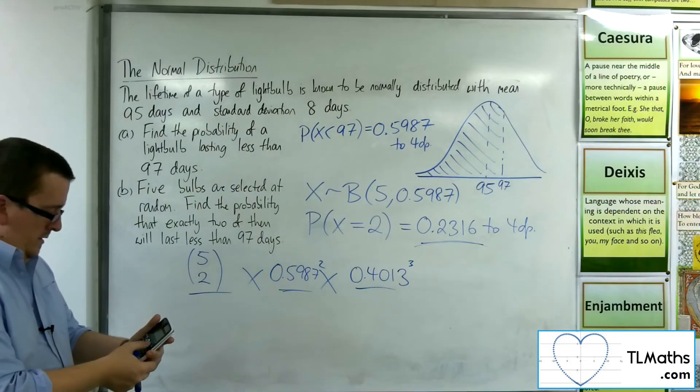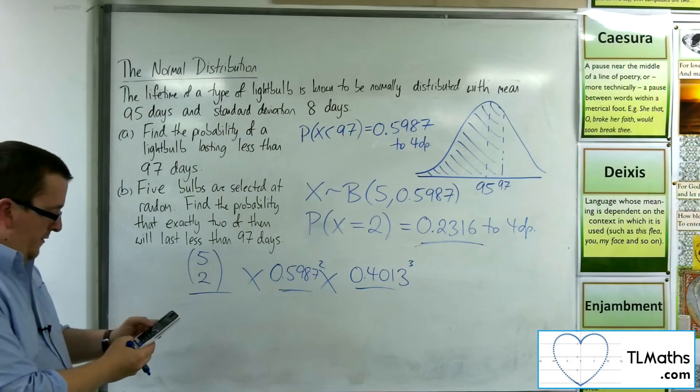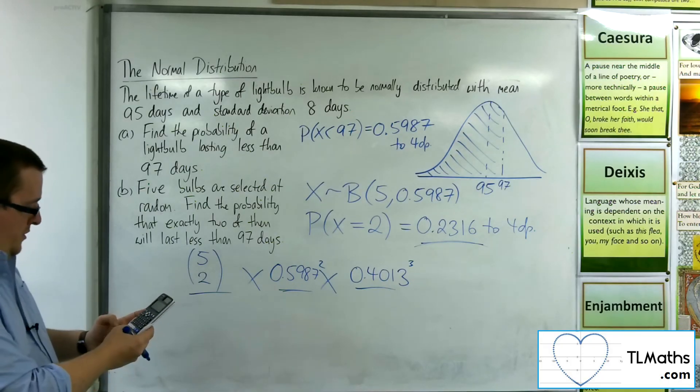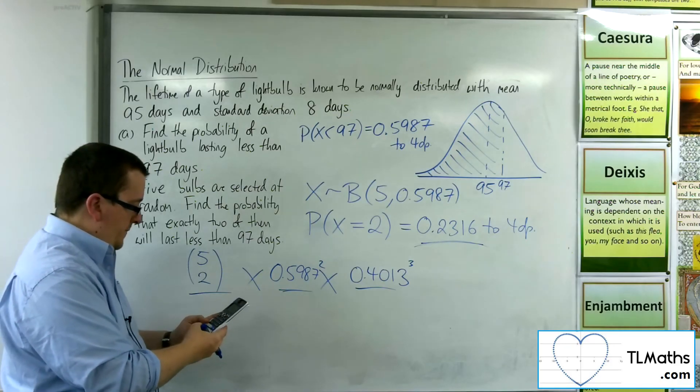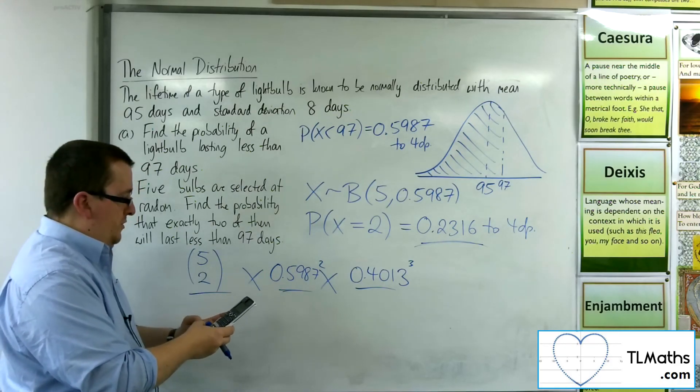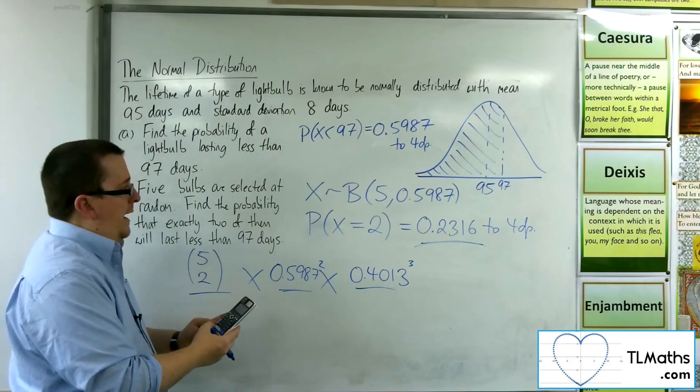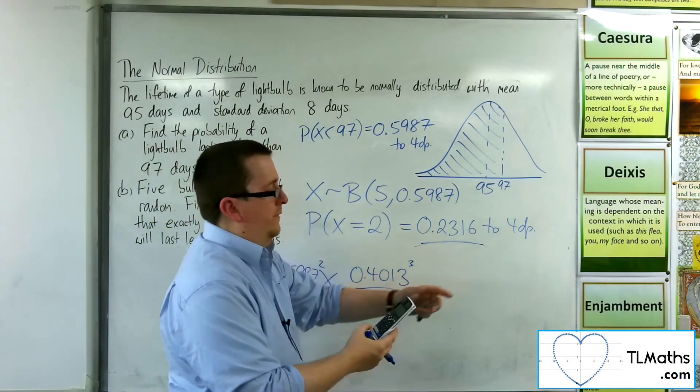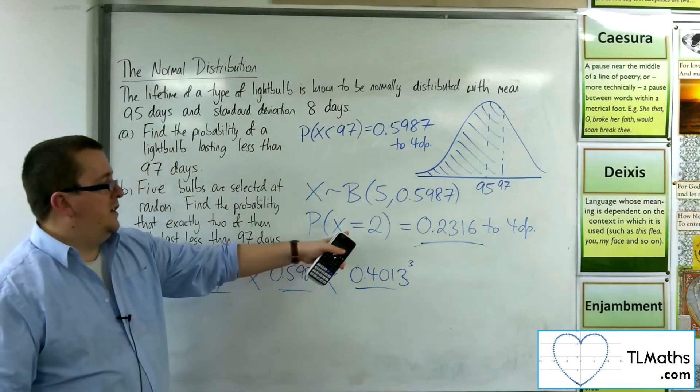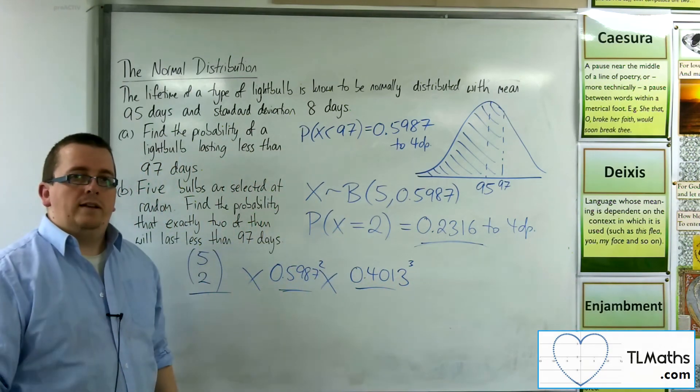So if we type that in, 5NCR2 times 0.5987 squared times by 0.4013 cubed, and I get precisely the answer that I got there. But obviously you can use your calculator to get there directly.